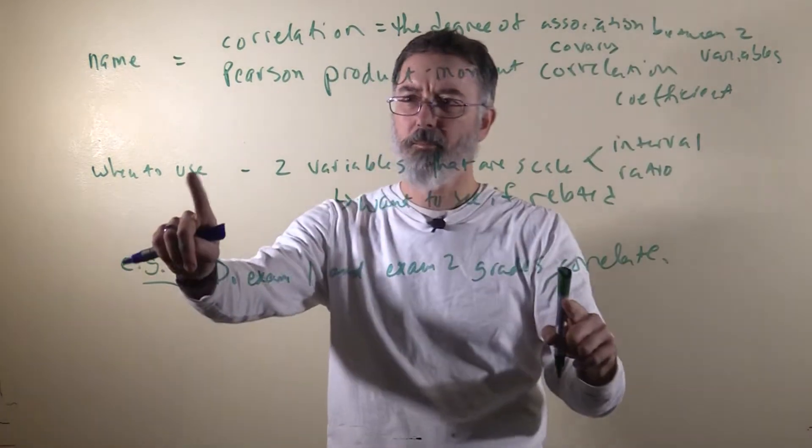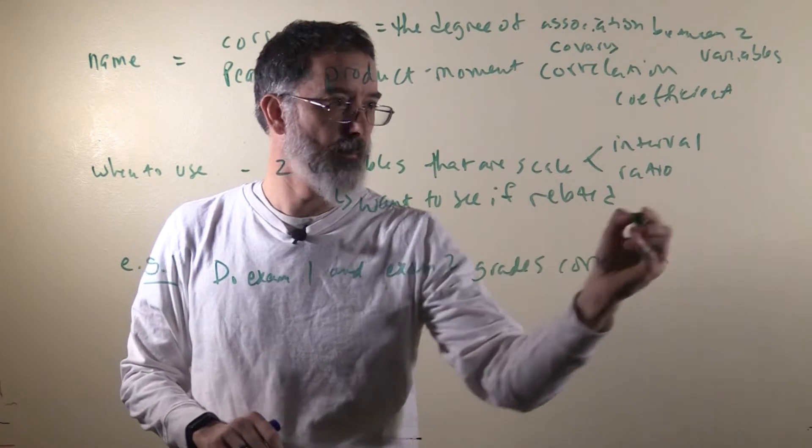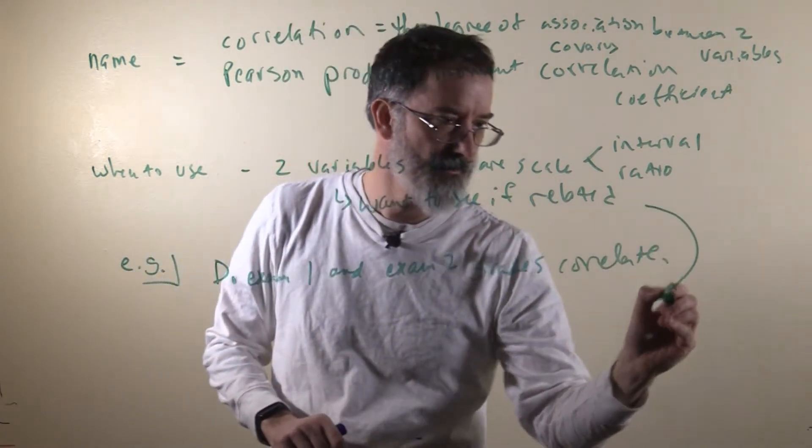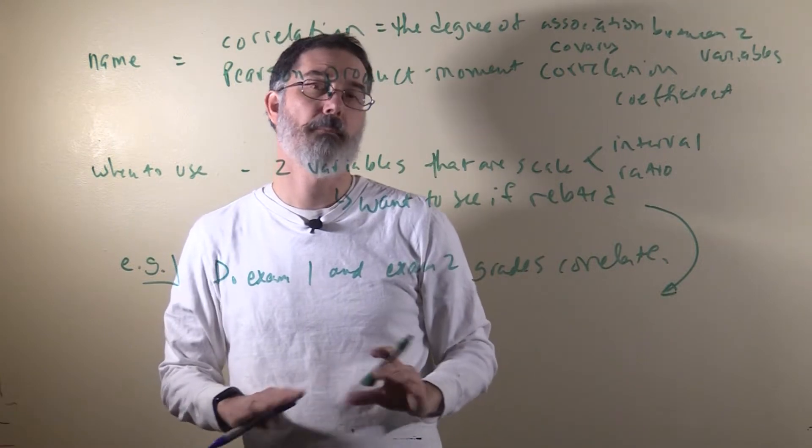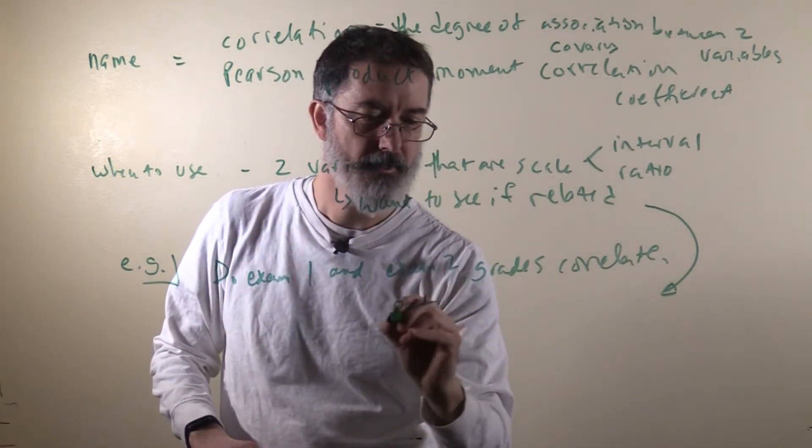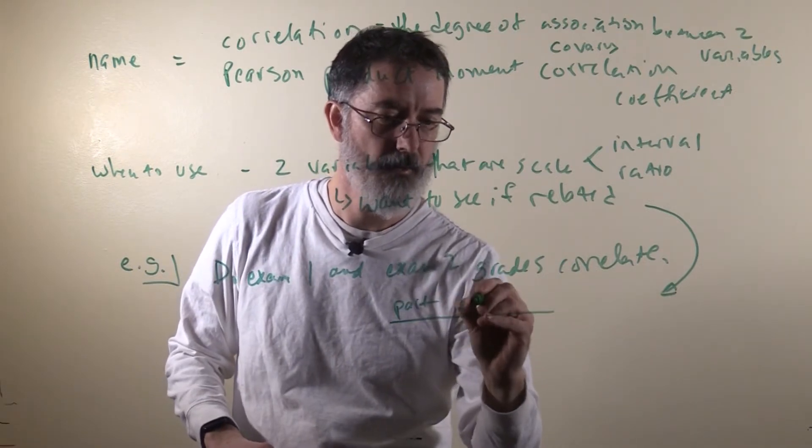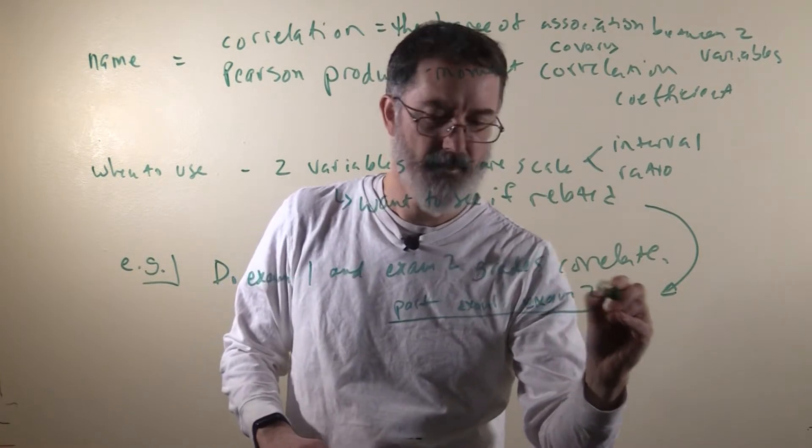I want to talk a little bit more about when to use it, because these two variables have to be set up in a certain way. They need a certain data structure. The kind of data structure they need is the same kind that was used for a paired samples t-test. Here you have your participant, variable 1, exam 1, and variable 2, exam 2.